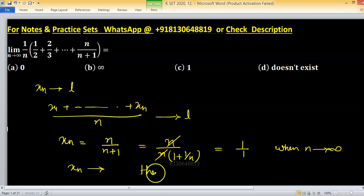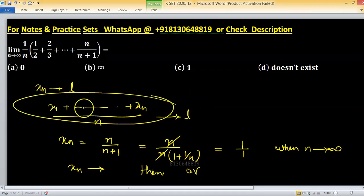Then limit of average - this is nothing but average - so limit of average will be 1. How? x1 plus and so on up to xn divided by n is going to 1.